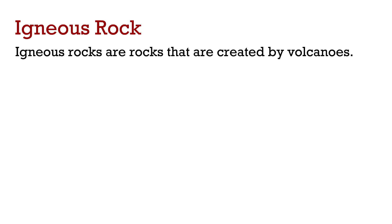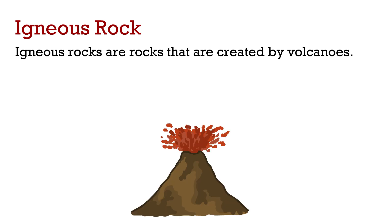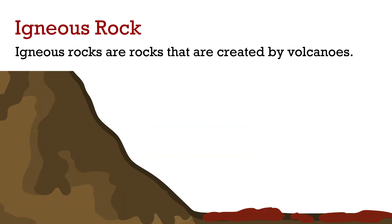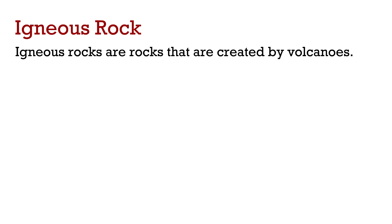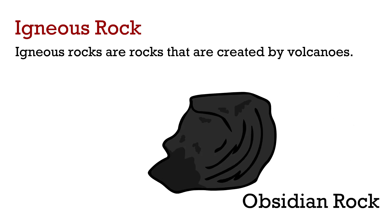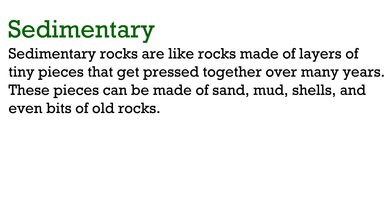Igneous rocks are rocks that are created by volcanoes. When a volcanic eruption occurs, the volcanoes release hot molten rock called magma. When this magma cools down, it eventually hardens into a rock, also known as igneous rock. One example of an igneous rock is obsidian — you might have heard of it.